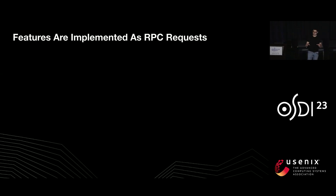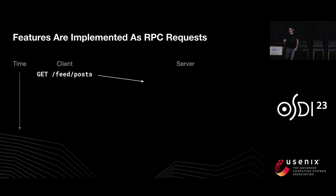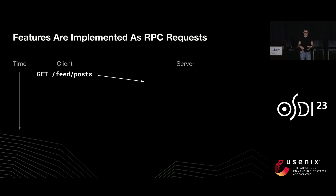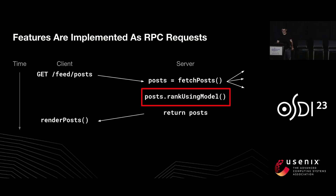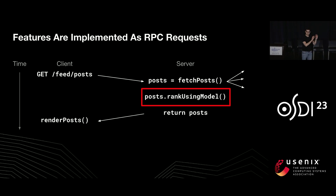One key thing to understand is that features at Meta are implemented as RPC requests. For example, if I take out my phone and open up the Threads app, I'm going to send an HTTP GET request to a virtual IP address that maps to a server in one of Meta's data centers. That server performs some computation and arranges posts to send back to the client. Most of the complexity and resource utilization for this feature is implemented in a relatively isolated and small critical section of code on the server, and we're going to use that to build a technique around it.